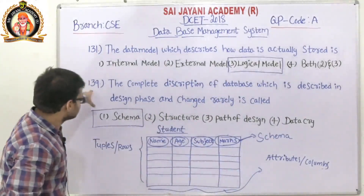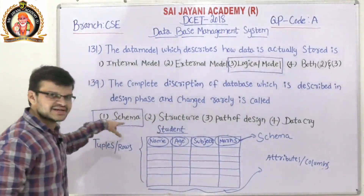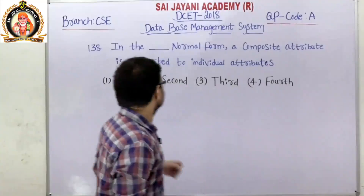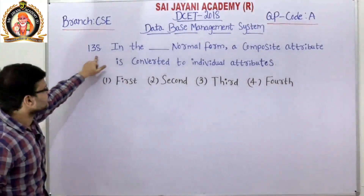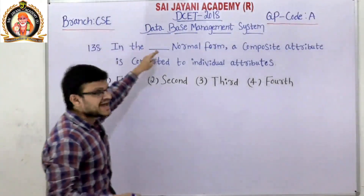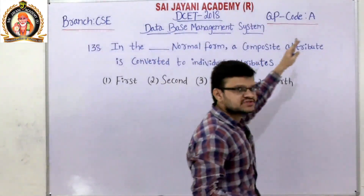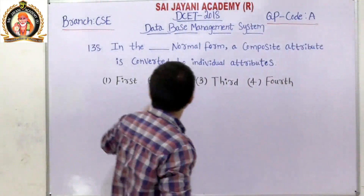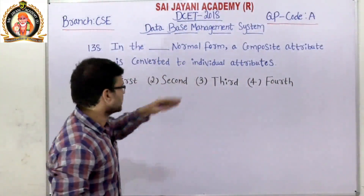For question number 139, the first option, schema, is the right answer. Moving to question number 138: In which normal form is a composite attribute converted into individual attributes? The four options are first, second, third, and fourth normal form.